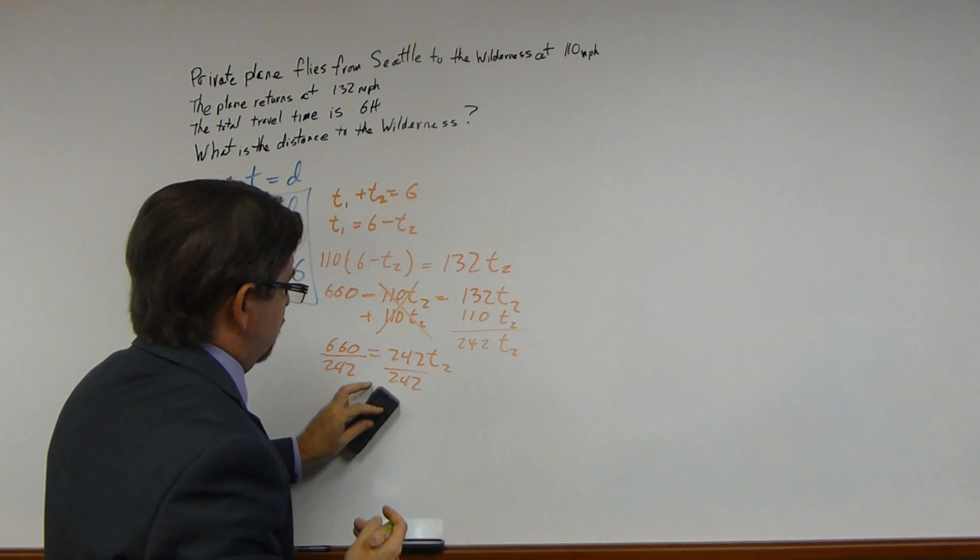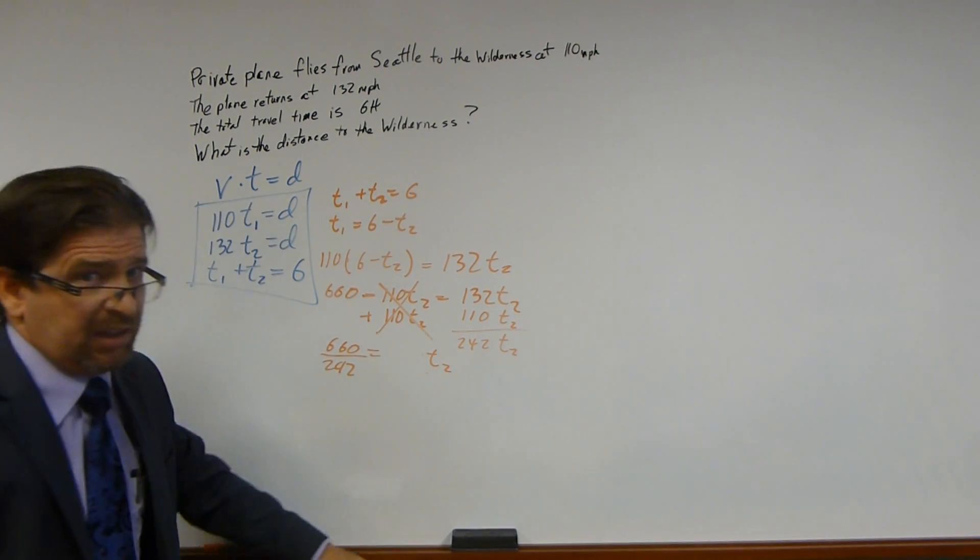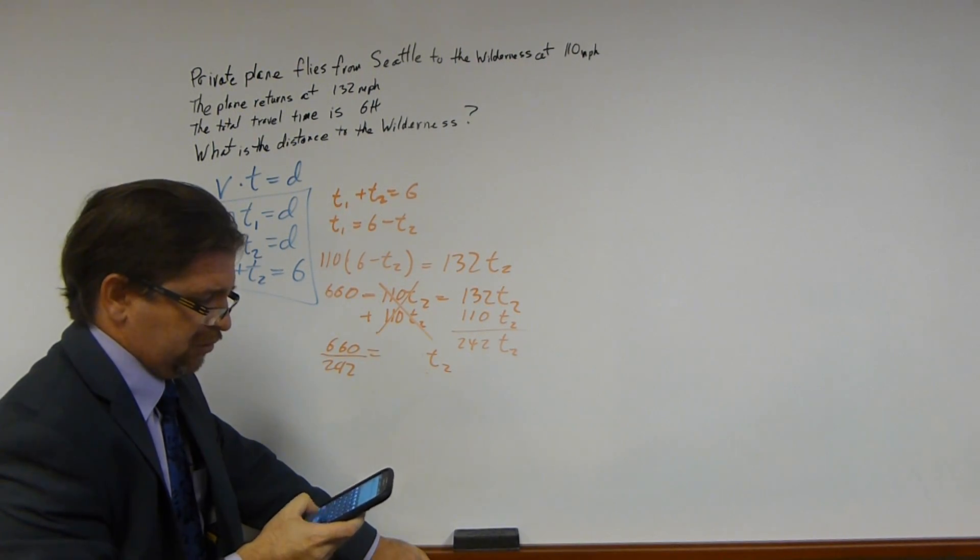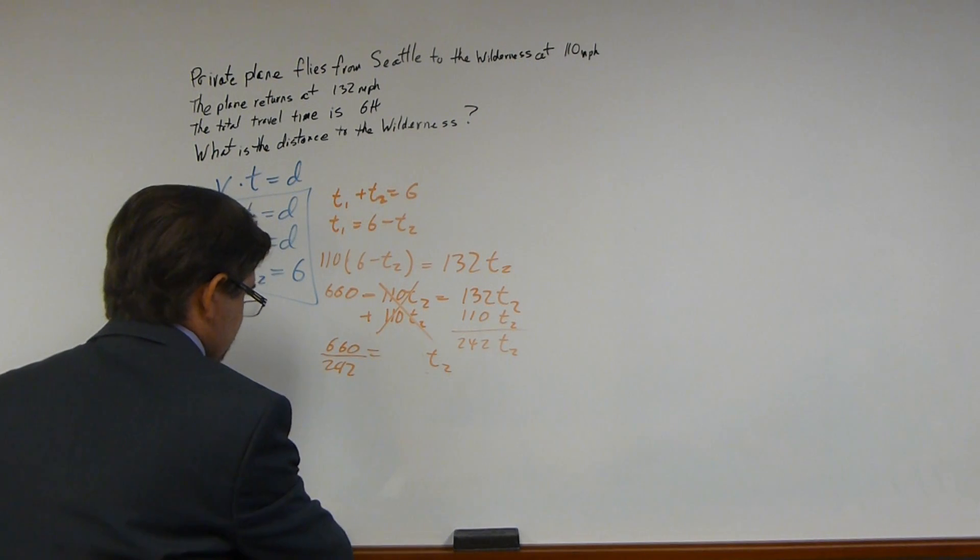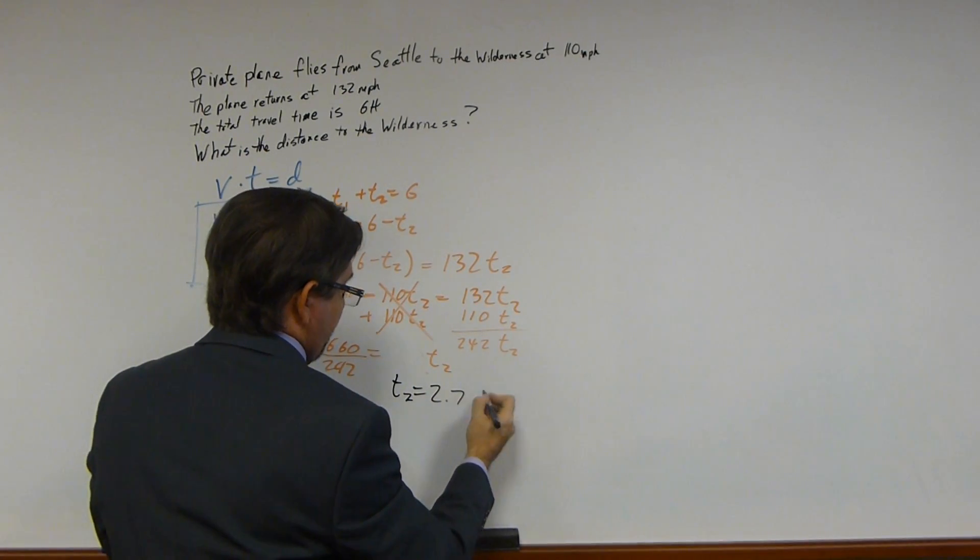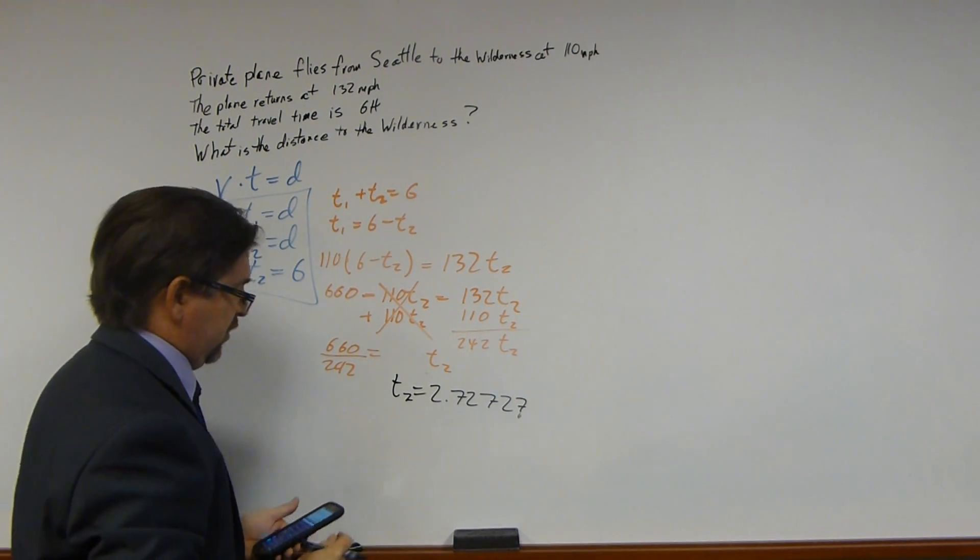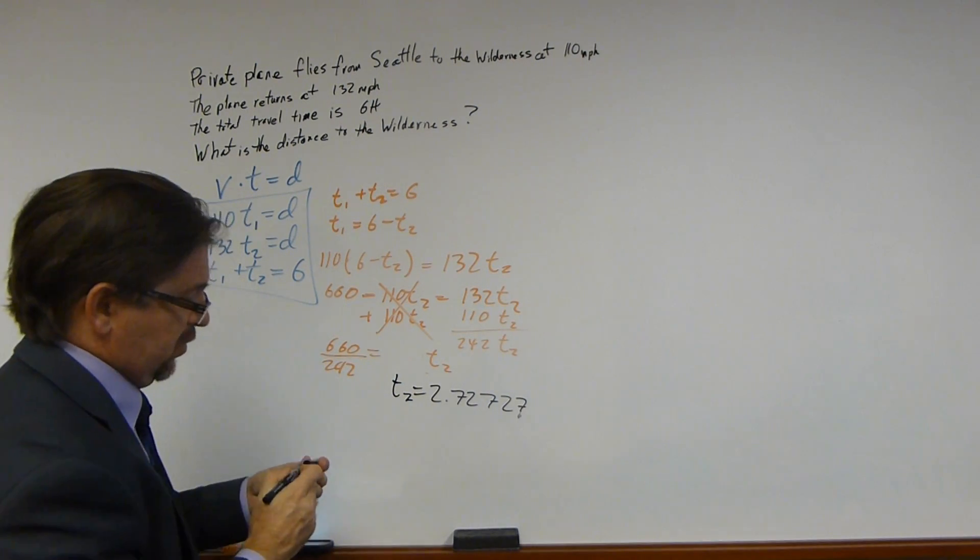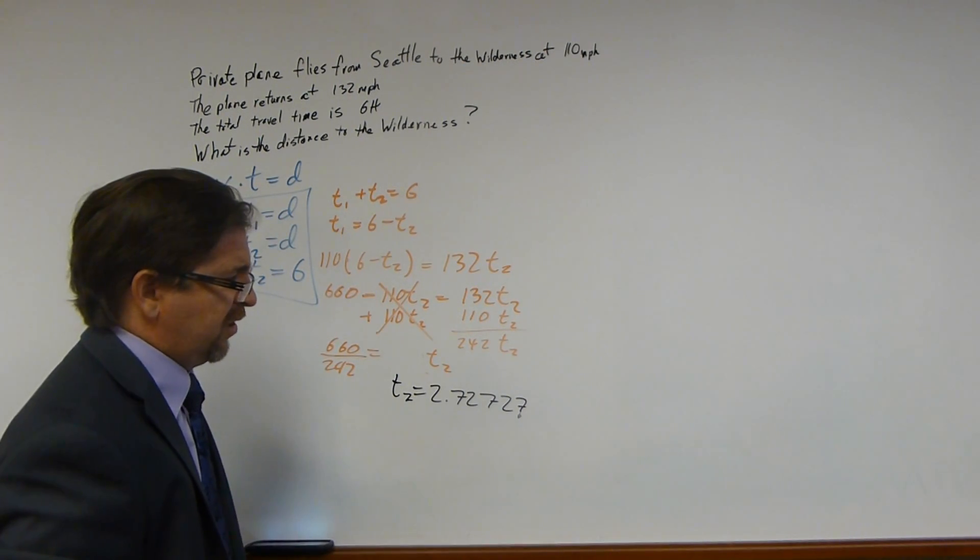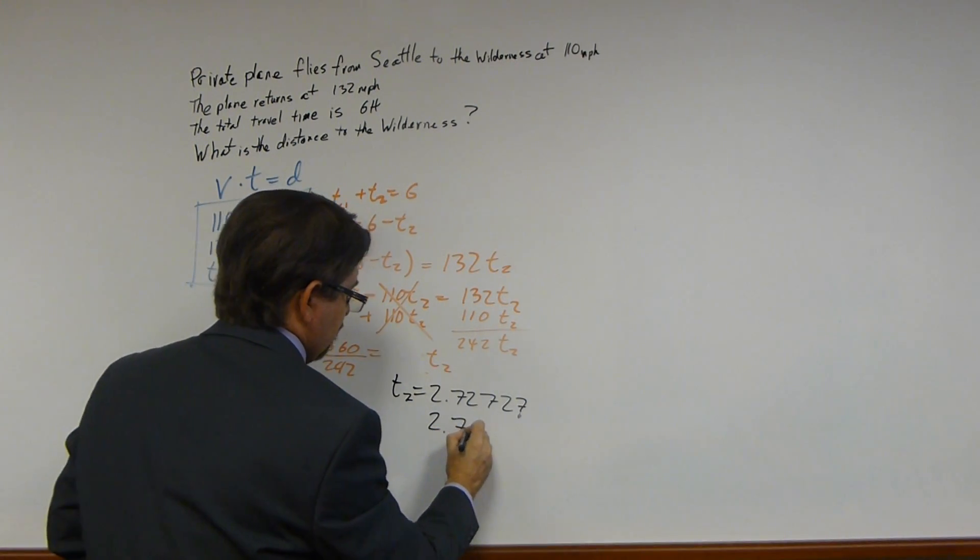We have 660 divided by 242. I cannot do that in my head. Pull the calculator out. 660 divide by 242 gives us T2 equals 2.7, well, we have a whole bunch of decimals here. And you know what? We don't need all those decimals. Because those decimals are going forever. I'm going to guess it's going to round it off to one decimal place. So I'm just going to say 2.7, 2.7 hours.